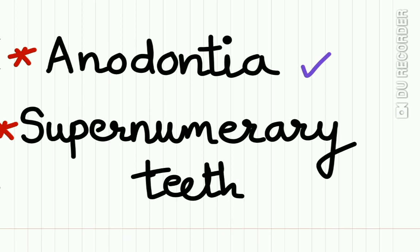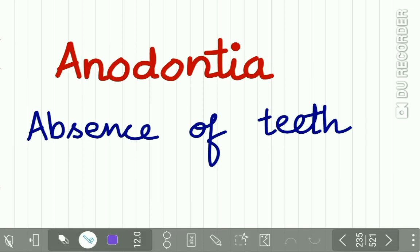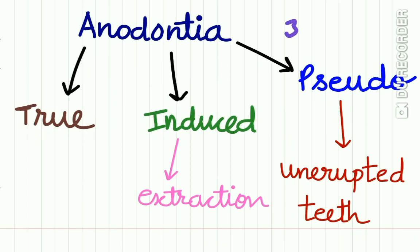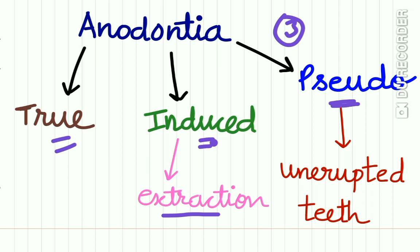Those two pathologies are anodontia and supernumerary teeth. Beginning with anodontia: anodontia is the absence of teeth. There are three types of anodontia — true anodontia, induced anodontia, and pseudo anodontia. True anodontia is a condition in which the teeth are actually absent. Induced anodontia is caused by extraction of teeth due to reasons like caries or periodontal diseases. Pseudo anodontia is a condition in which the teeth are actually present in the jaws but are impacted or have not yet erupted.